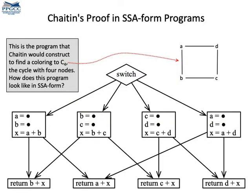Well, Chaitin's proof, I mean, that result that showed that register allocation is NP-complete, works for general programs. It does not work in SSA form programs. For instance, let's look into the example that we have used to do Chaitin's demonstration. The program that represents C4, a cycle with four vertices. That's the program.